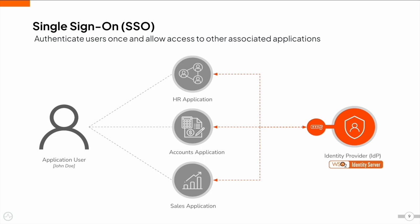Single Sign-On, or SSO, eliminates the need for users to enter login credentials every time they log into an application. When a user tries to log into an application, the application redirects the user to the IDP for authentication. After a successful authentication, the IDP sends the authenticated user information back to each application. When the same user tries to access another application in the system, the IDP seamlessly logs the user in without prompting them to log in again. There are standards such as SAML, OIDC, and WS-Federation that define these requests and responses.